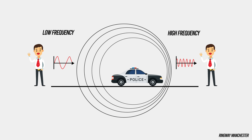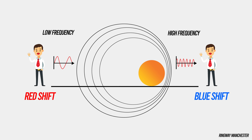Doppler shift, or the Doppler effect, refers to the change in frequency or wavelength of a wave in relation to an observer moving relative to the source of the wave. In simple terms, when a sound or light source moves towards you, the waves are compressed, leading to a higher pitch for sound or a shift towards the blue end of the spectrum for light. If the source moves away from you, the waves are stretched, resulting in a lower pitch for sound or a redshift for light.